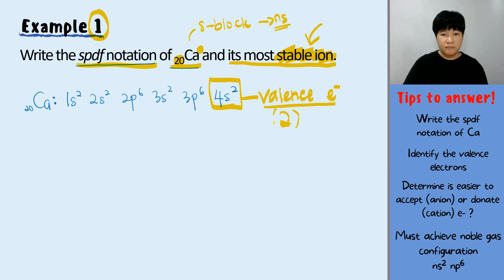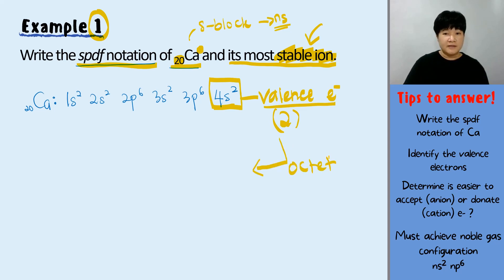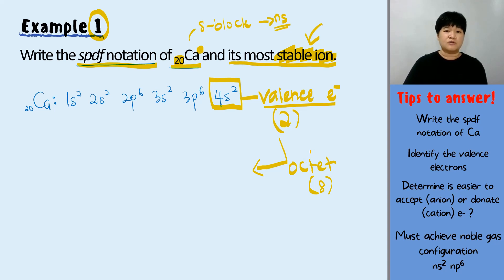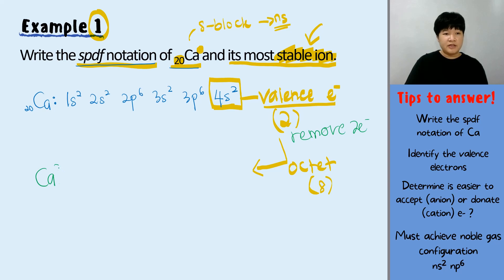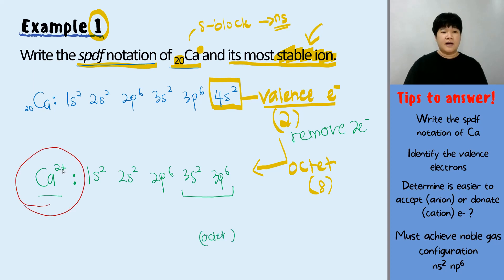With 2 valence electrons, to achieve octet it is easier to remove 2 electrons than to accept 6 more. Removing both valence electrons gives Ca2+. The SPDF notation of Ca2+ obeys the octet rule, making calcium 2+ the most stable ion.